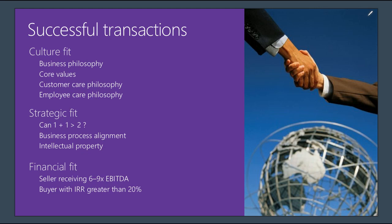Financial fit: sellers in partner companies under $50 million typically receive six to nine times EBITDA — seven to eight is pretty typical. From a buyer perspective, you want an internal rate of return greater than 20%, which means less than a five-year payback.